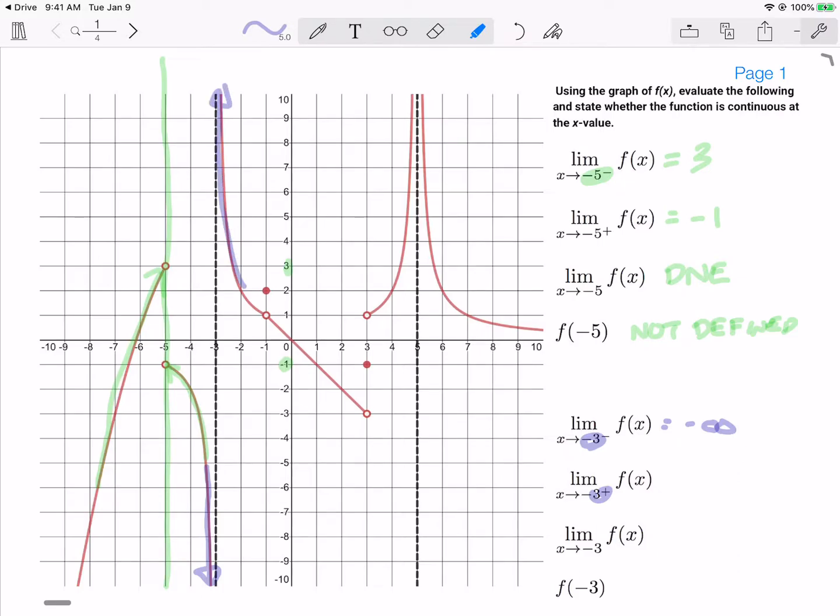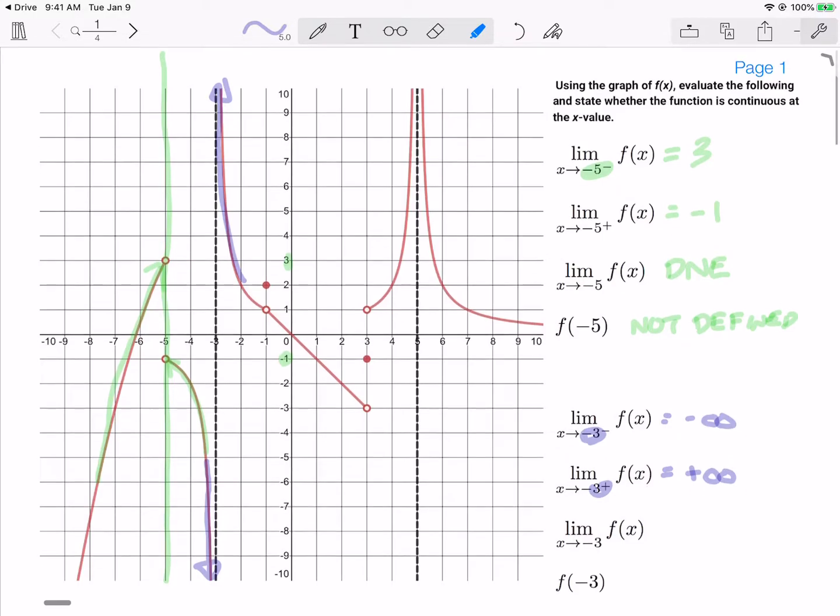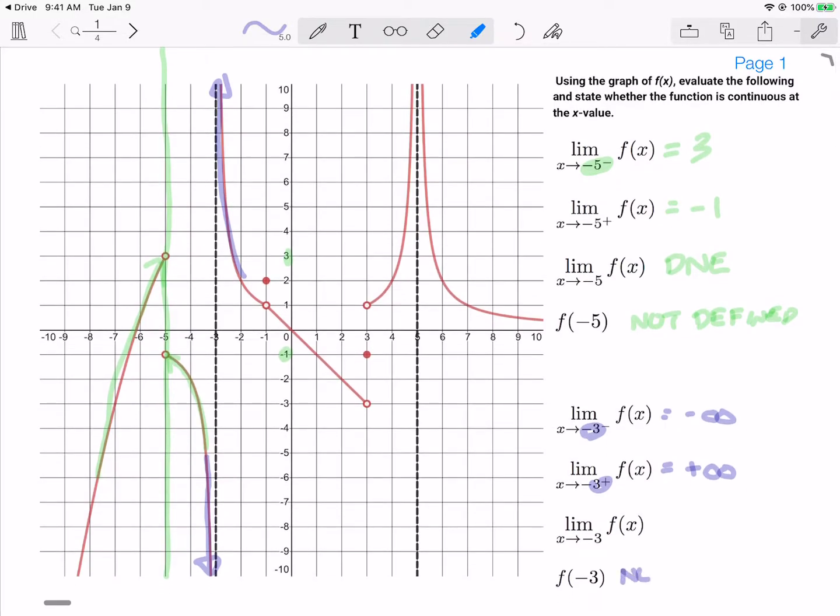So because both of these limits are some form of infinity, we know we have a vertical asymptote there, which also tells us that the function is not defined at that particular point. And because these two infinities are different signs, the limit does not exist.